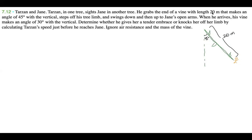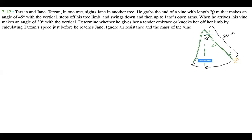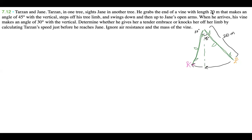The vine swings all the way down and then travels up to an angle of 30 degrees, where it swings up to Jane's arms. Jane is right at that point. The vine stays 20 meters the entire time.